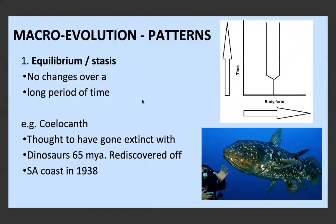There are a few patterns of macroevolution. The first is equilibrium or stasis, where there are no significant changes over a very long period of time and the organism basically stays the same. The main example is the coelacanth — we thought they went extinct with the dinosaurs 65 million years ago, but they were rediscovered off South Africa's coast less than a hundred years ago. We call them living fossils because we have fossils from 65 million years ago, yet they were still alive at least in 1938. On a phylogenetic tree, many species remain virtually unchanged for millions of years.